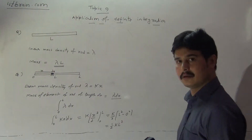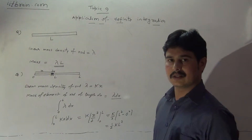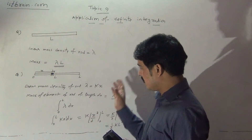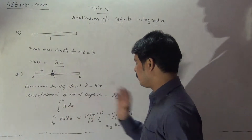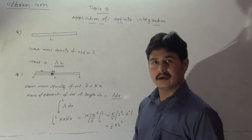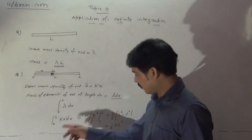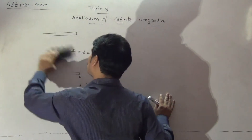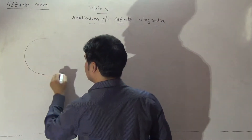This is the total mass of the rod in that case. If there is variability in any problem, we use this strip approach and definite integration. In physics, definite integration is heavily used. The difference between mathematics and physics is that in maths we solve a given integral within limits, whereas in physics we must first set up or create the integral from the physical situation.